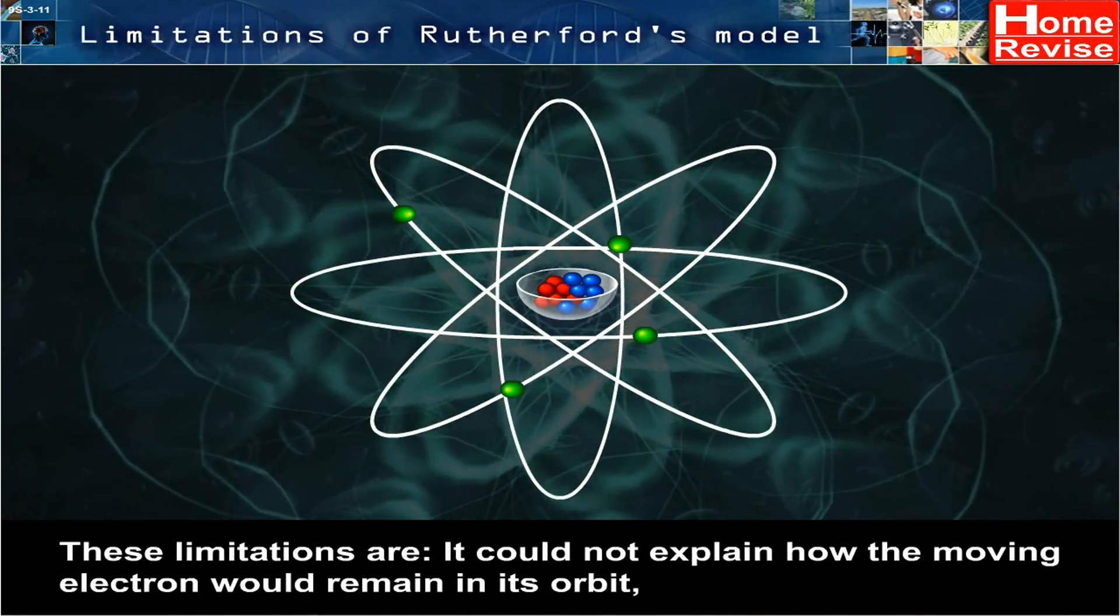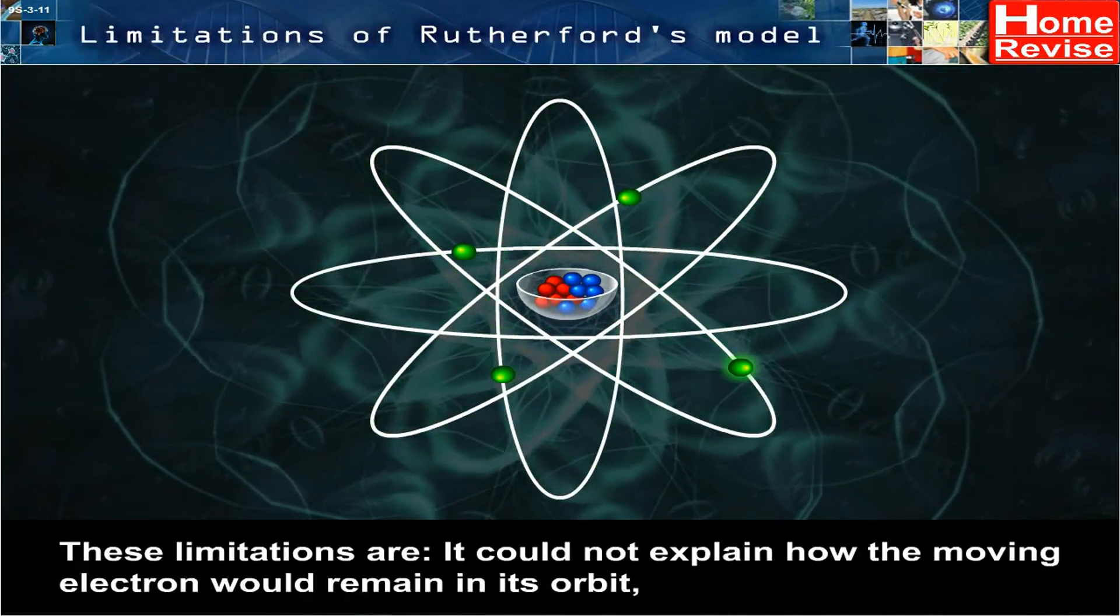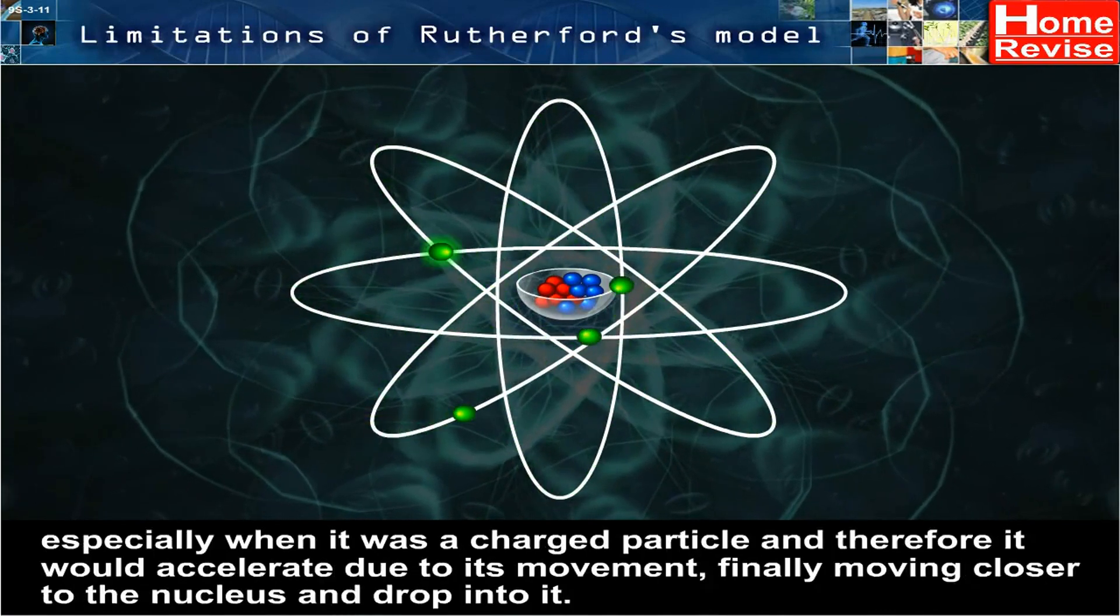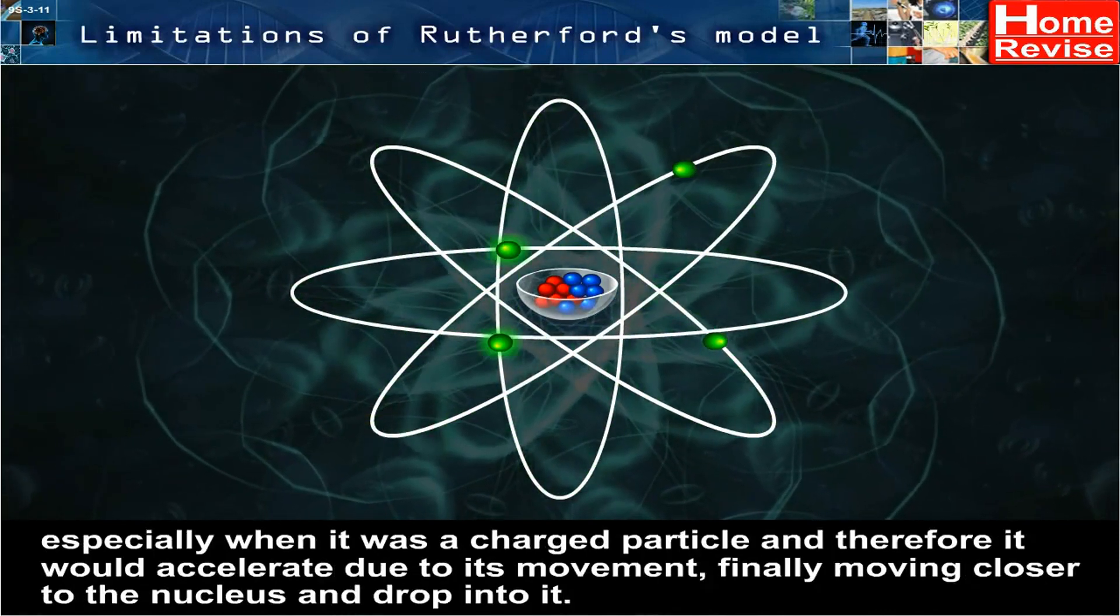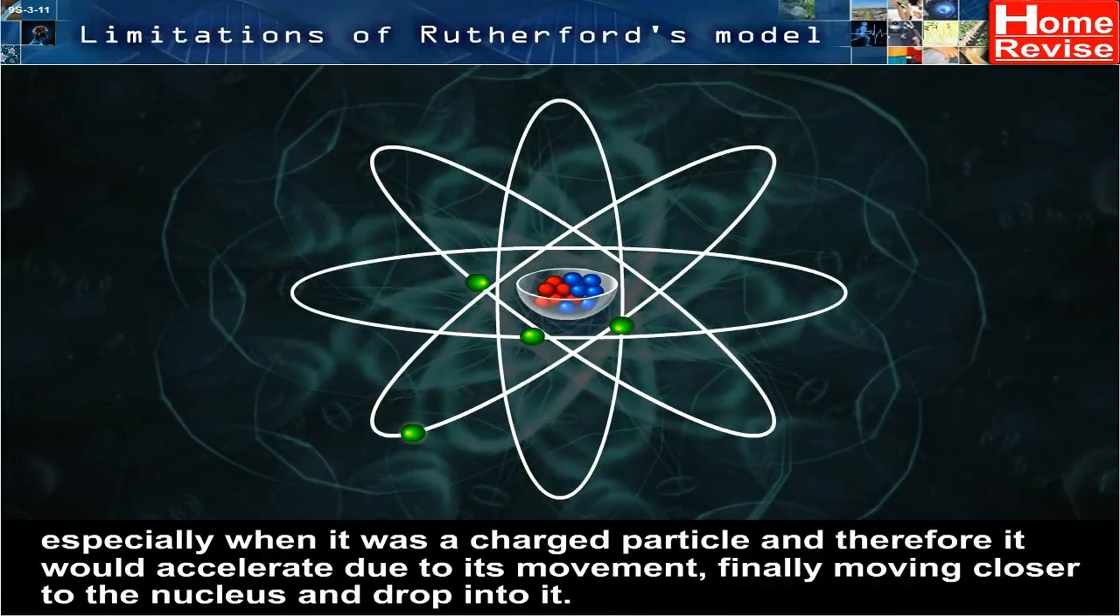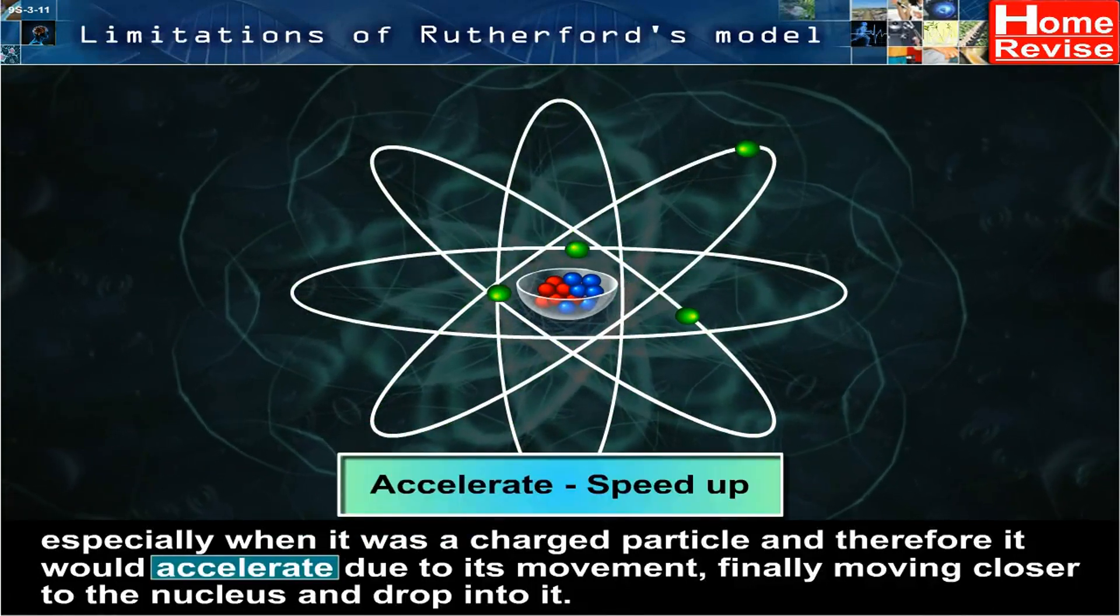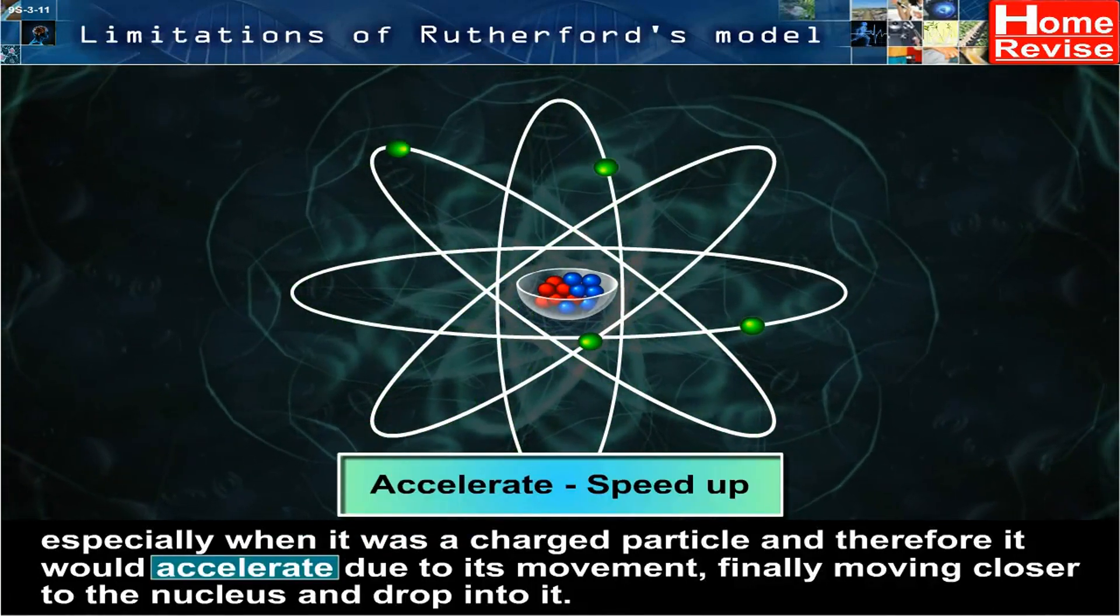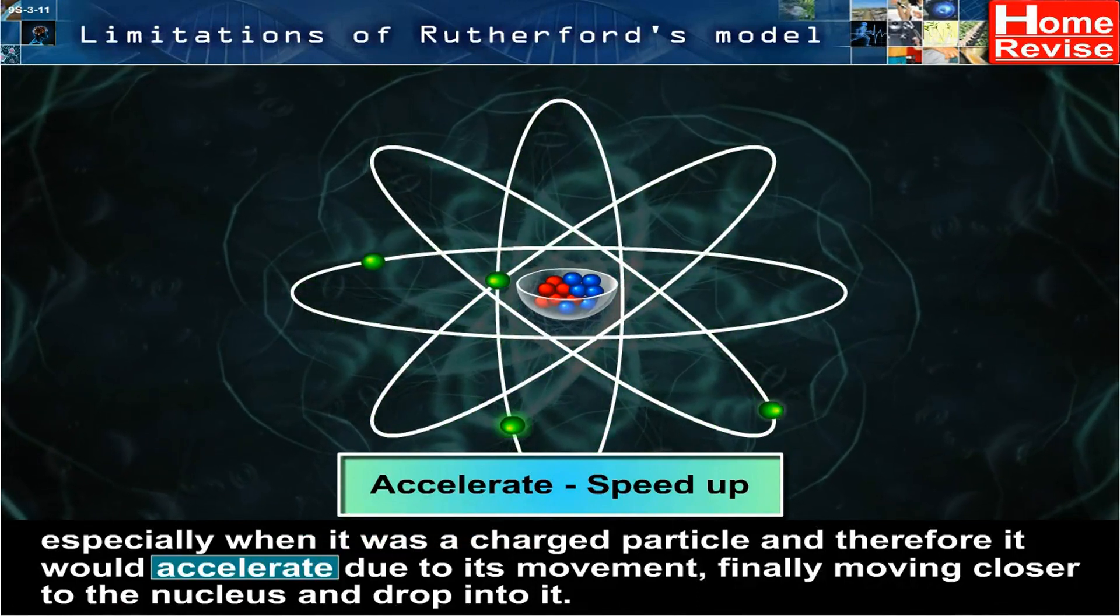It could not explain how the moving electron would remain in its orbit, especially when it was a charged particle, and therefore it would accelerate due to its movement.